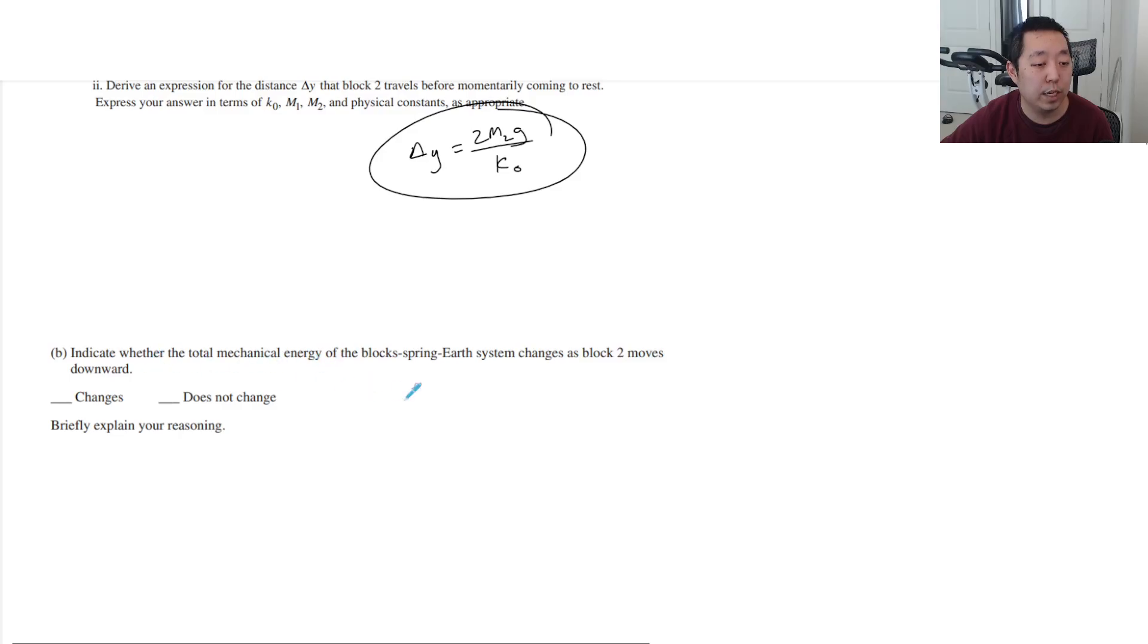Indicate whether the total mechanical energy of the block spring earth system changes the block moves downward. If it's the whole system does not change, there is no external forces that are doing work. Work that do work on the system. Work is necessary for a change in the total mechanical energy system. So do work on the system.